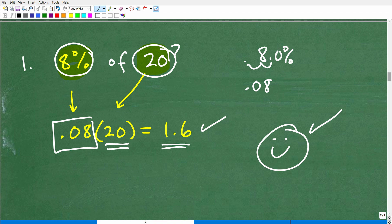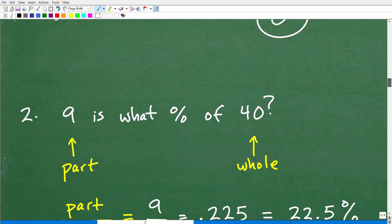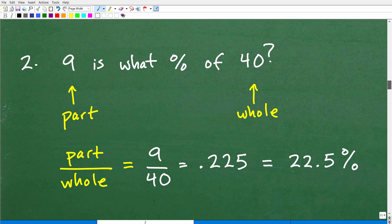All right, so let's move on to the next problem. Again, I'm trying to keep this around 10 minutes. I'm pretty sure I'm going to go over a bit, so hopefully you won't hold that against me. But let's move on to the second problem here. 9 is what percent of 40? So we're trying to determine the percent. But when we think about this, remember I told you to think about that part and whole way of conceptually thinking about percent.